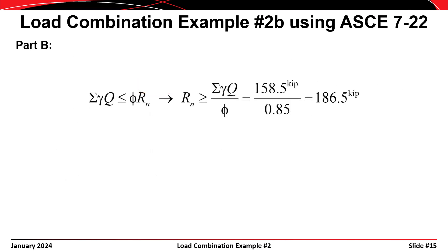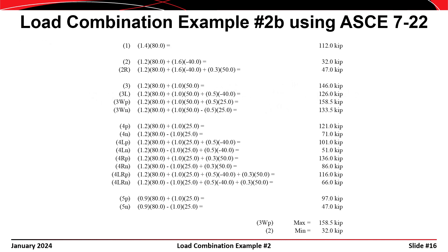Now that we have our new required design strength — the sum of gamma times q equal to 158.5 kips — we can determine the required nominal strength R sub n by dividing by the resistance factor of 0.85. In this case, the required nominal strength R sub n is 187 kips. Finally, here is a screenshot of the spreadsheet used to check all permutations of load combinations 1 through 5.